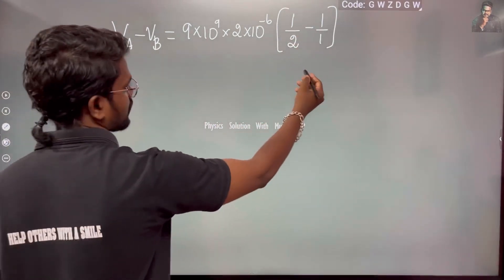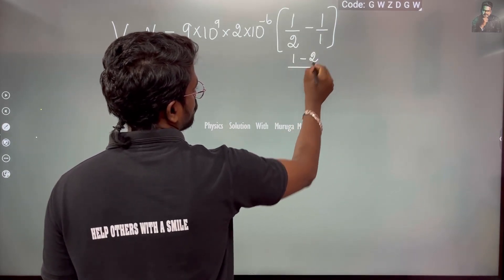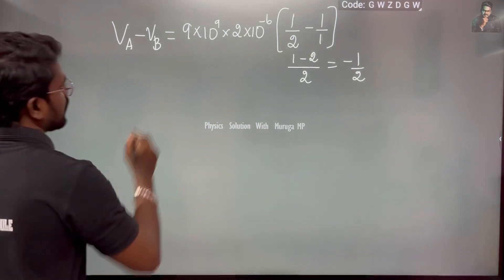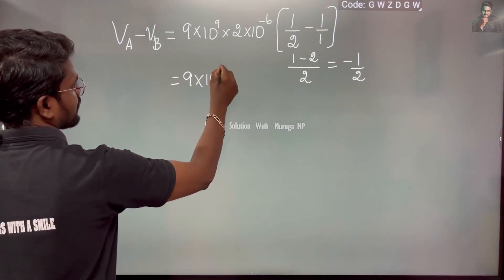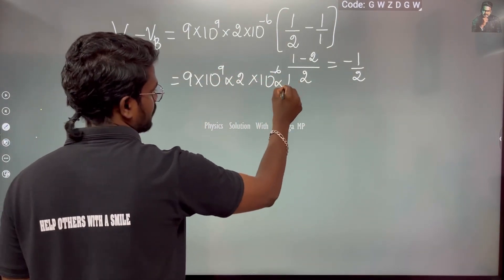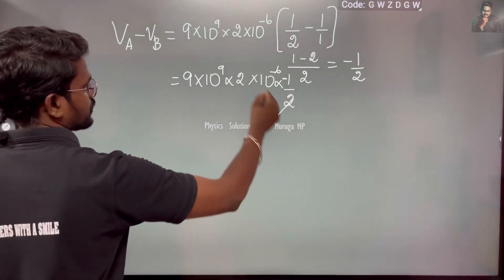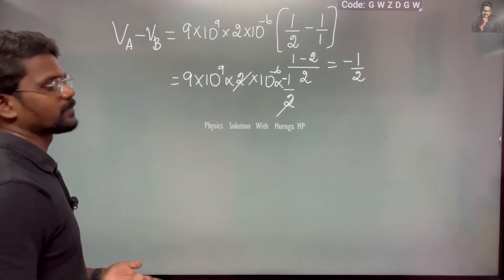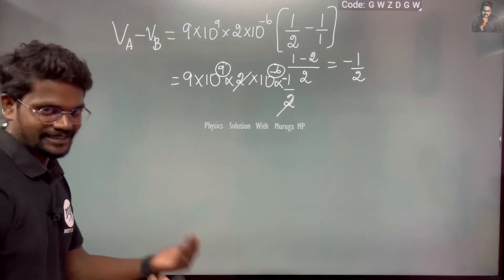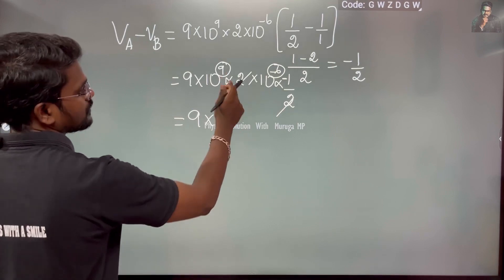Simplifying, we get 1/r1 minus 1/r2 = 1/2 minus 1 = minus 1/2. So VA minus VB = 9×10⁹ × 2×10⁻⁶ × (minus 1/2). The 2s cancel, and combining powers gives 9×10⁻³ times 10⁶, which gives minus 9×10³.